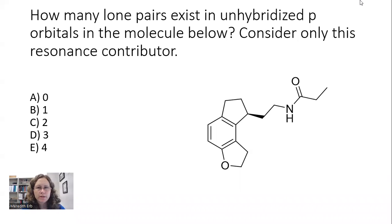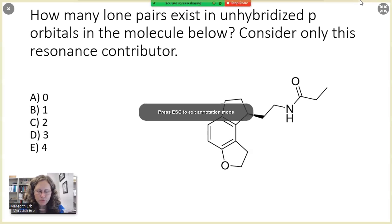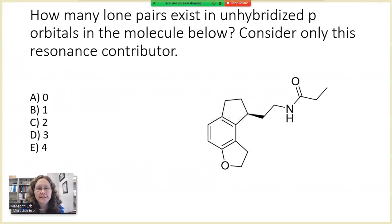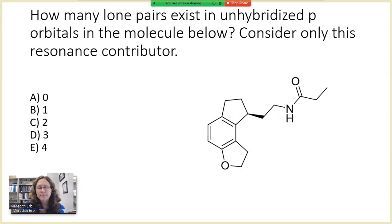This question asks how many lone pairs exist in unhybridized p orbitals in the molecule below, considering only this resonance contributor. This question is really about resonance — being able to identify the lone pairs on the molecule and understanding whether those lone pairs can participate in resonance. Resonance is key when thinking about p orbitals, because only electrons in unhybridized p orbitals can participate in resonance, so it's really important to be able to identify those p orbitals.